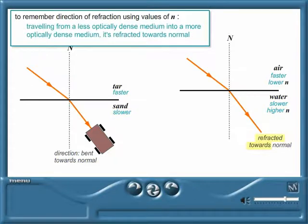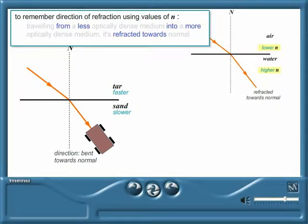We can learn a little rhyme to help us remember the direction of refraction. Travelling from a less optically dense medium into a more optically dense medium, it's refracted towards the normal. Try saying it like this to help you remember it: From less into more, it's refracted towards.